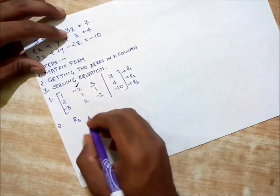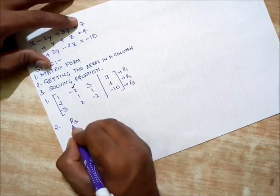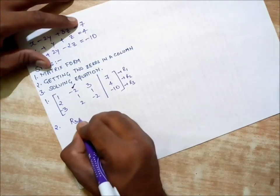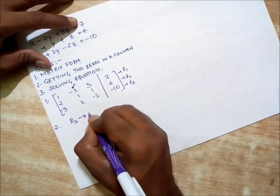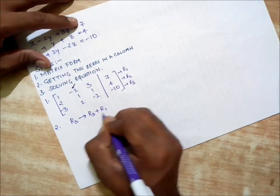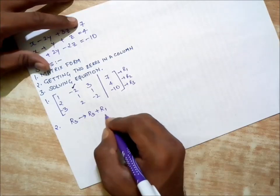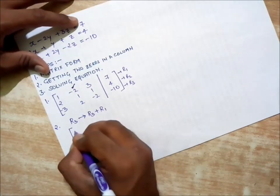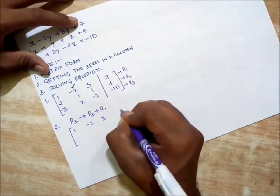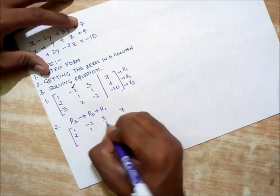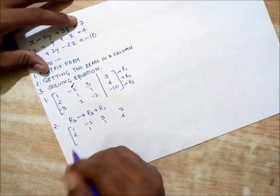What I'm going to do is row three. This is row one, this is row two, this is row three. Row three is going to be row three plus row one. That means the elements of row three will be added with the elements of row one. The first rows remain the same, no change.